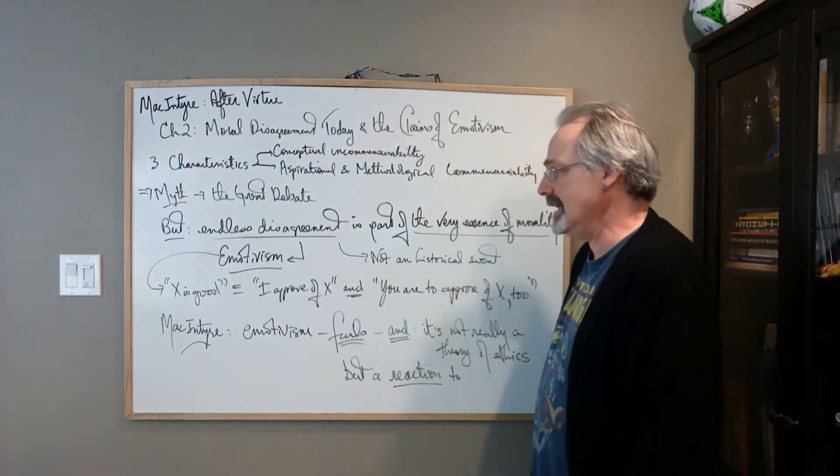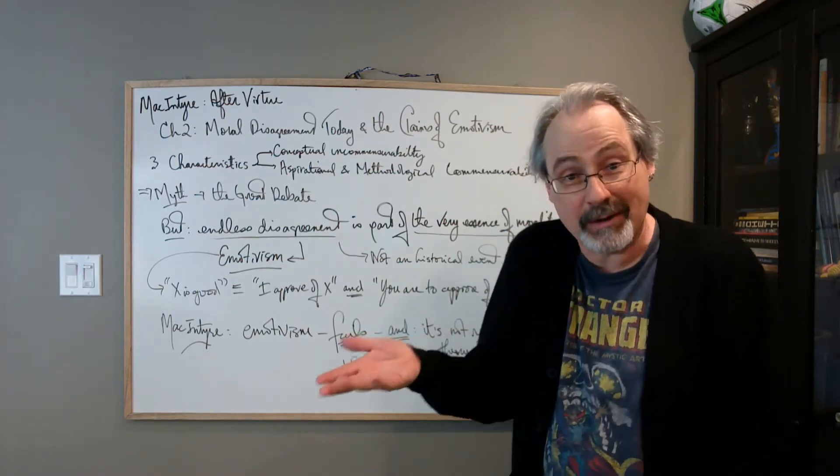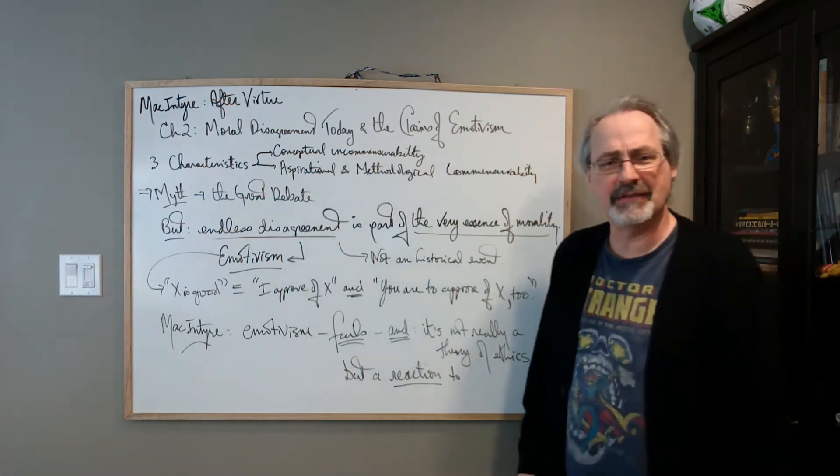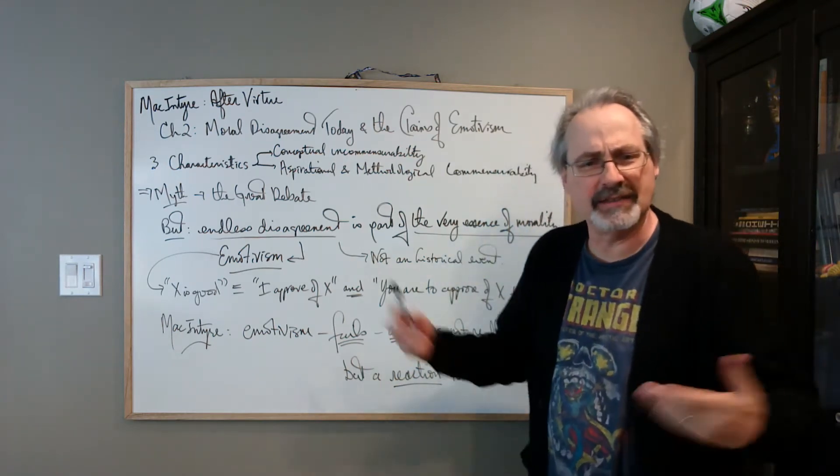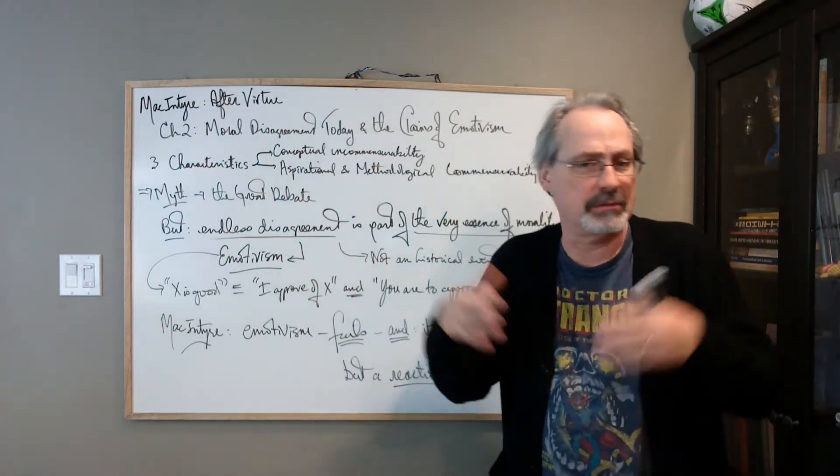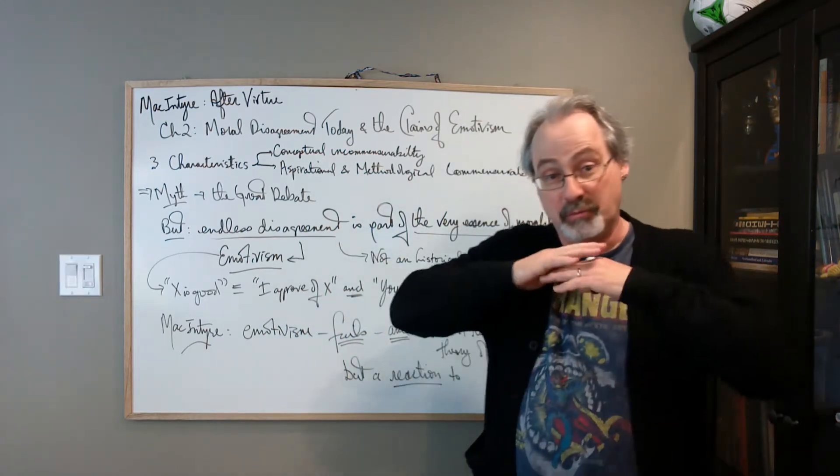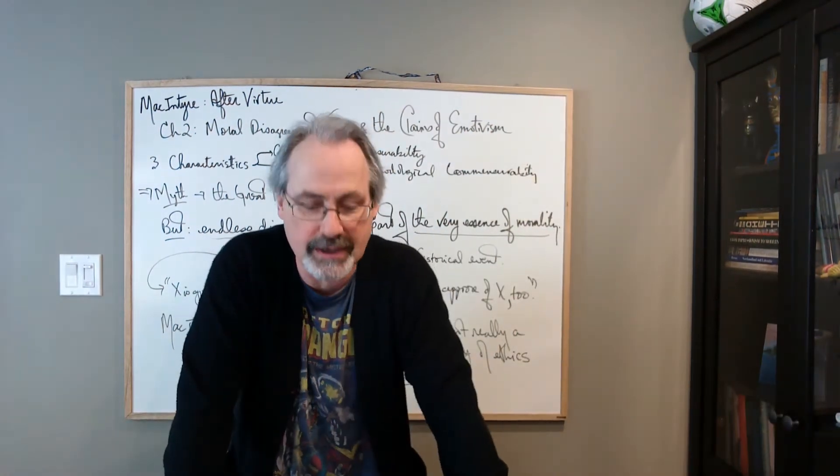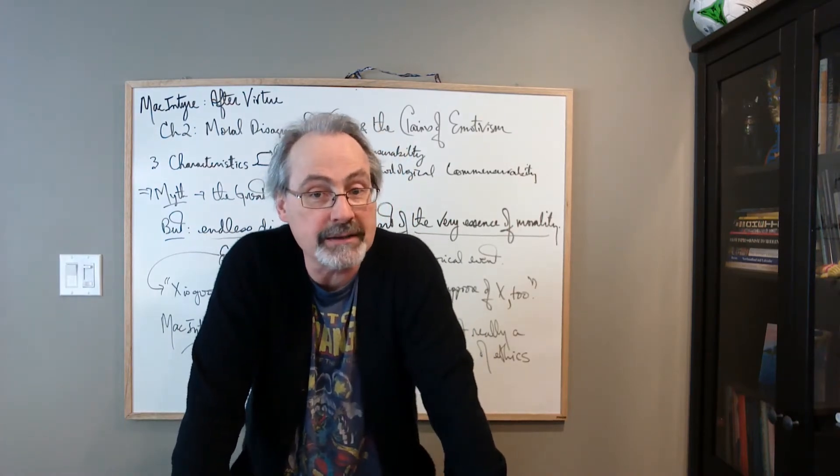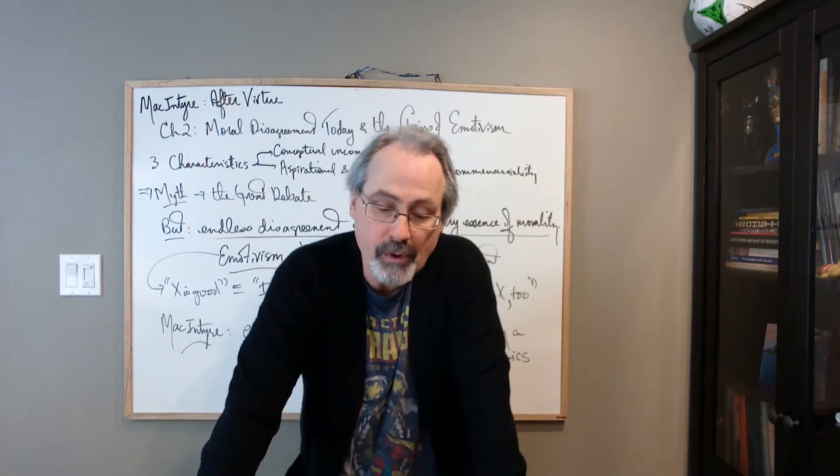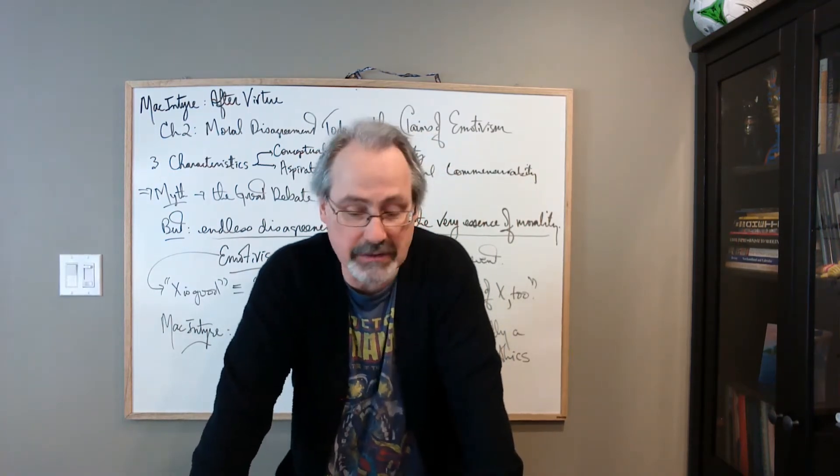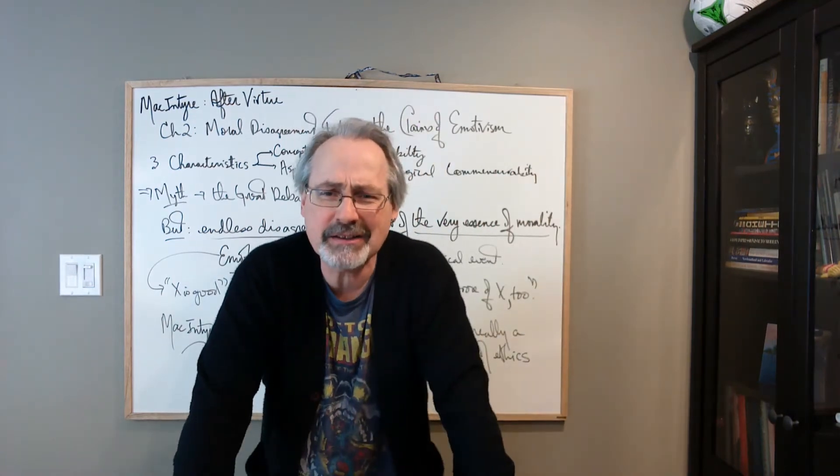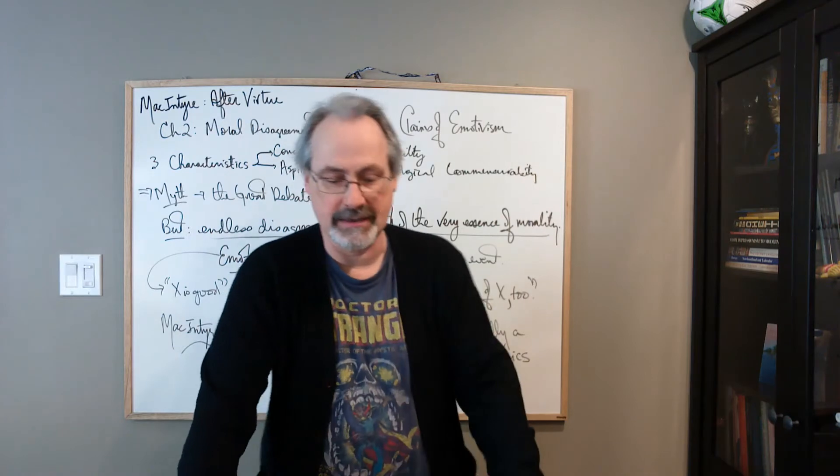History is not the place to look for a story to explain why, you started off the book correctly, that there's all this disagreement. That was right, I agree with you there MacIntyre, but I disagree with your explanation as to how we got to this disagreement. You're saying that there's a big historical thing that happened, whereas I'm going to say something like this. The reason why we have endless disagreement is very simple. That's part of the way morality is. Endless disagreement is part of the very essence of morality. It's not some fanciful historical event.